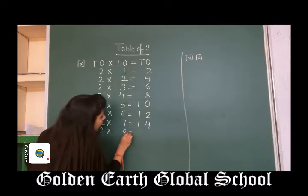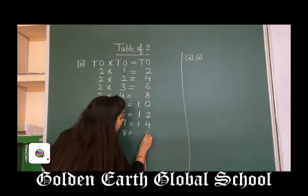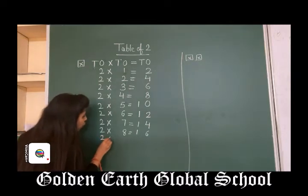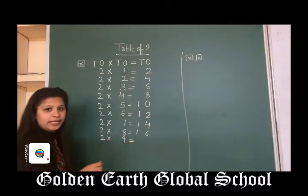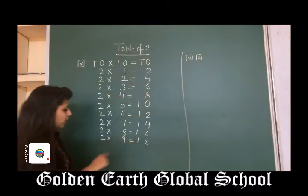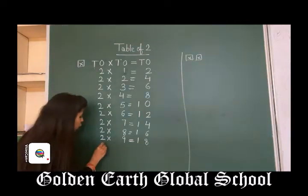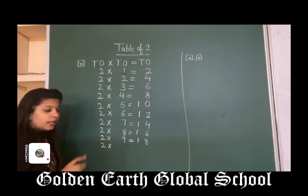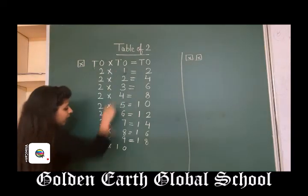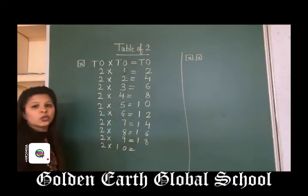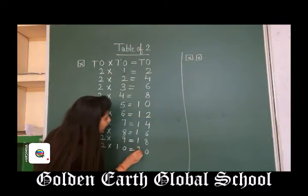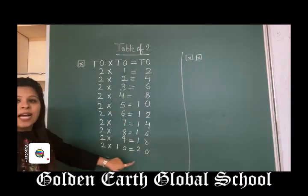2, 8s are 16. Write down 6 under 1s and 1 under 10s. 2, 9s are 18. Write down 8 under 1s and 1 under 10s. 2, 10s are 20. Write down 0 under 1s and 2 under 10s. Clear?